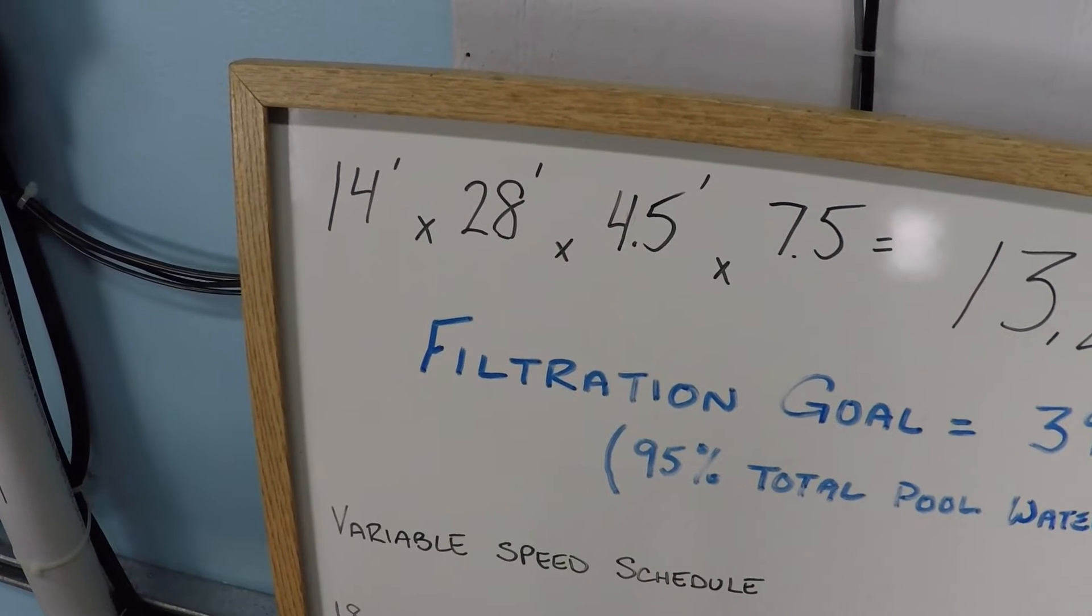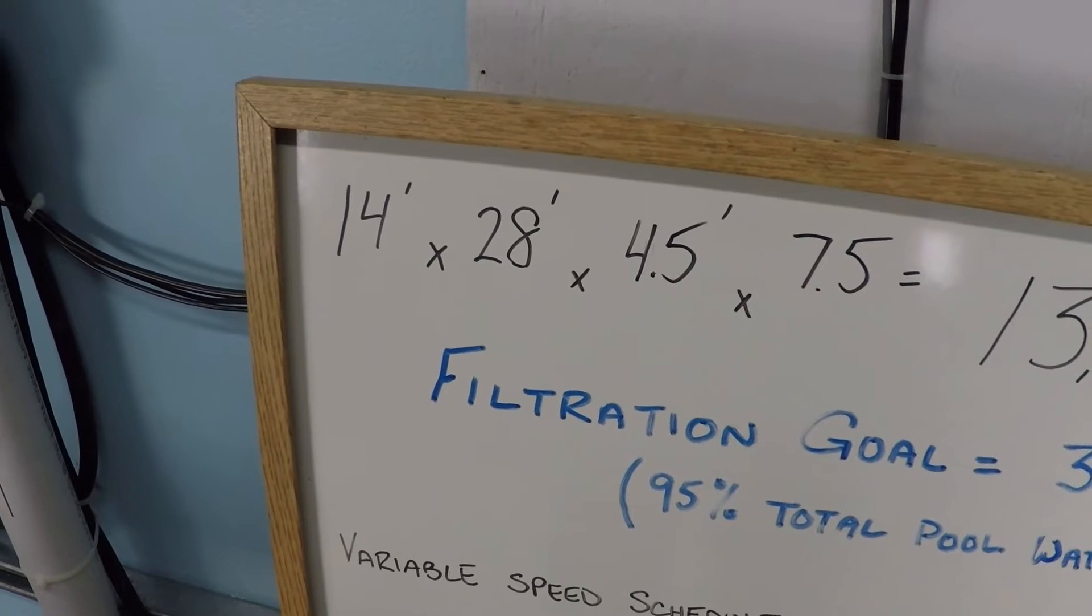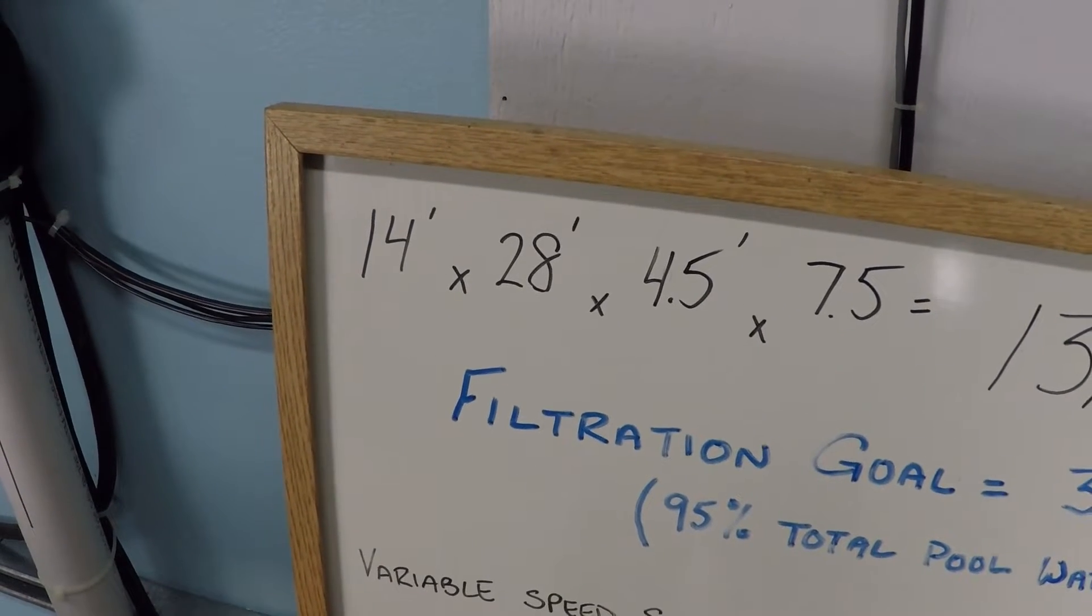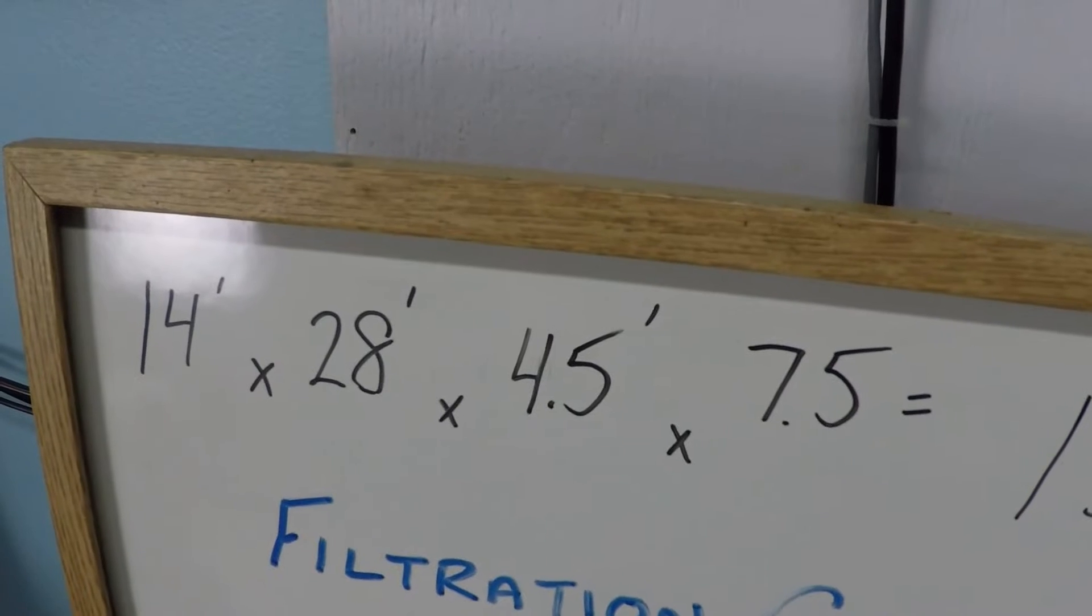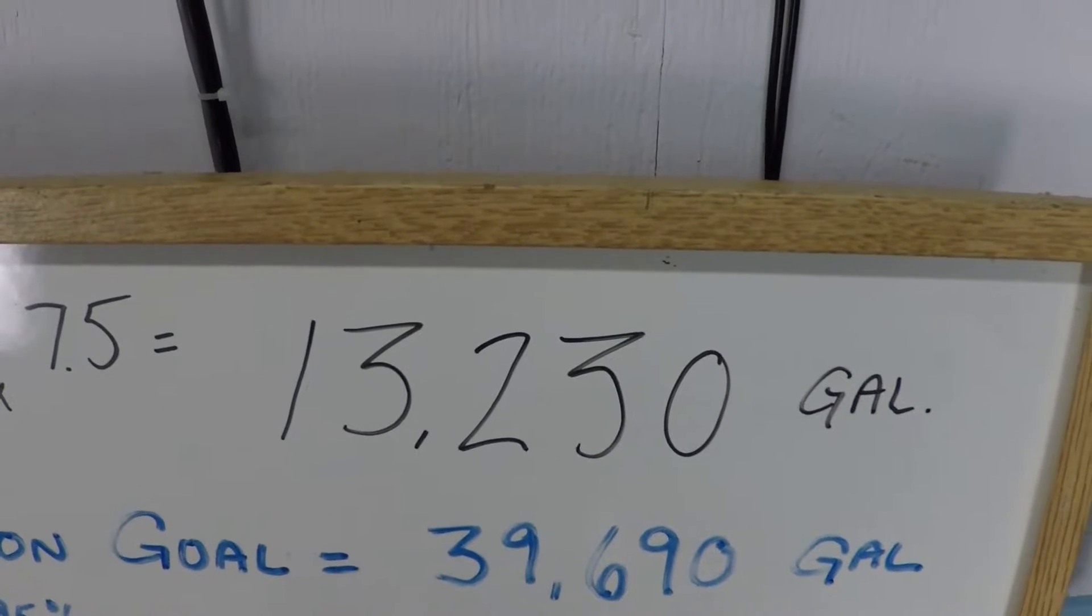In this video, we're going to be designing a filtration schedule for a 14 by 28 foot swimming pool with a variable speed swimming pool pump. The average depth of this pool is about 4.5 feet, so it's 13,000 gallons, or just a little bit over.